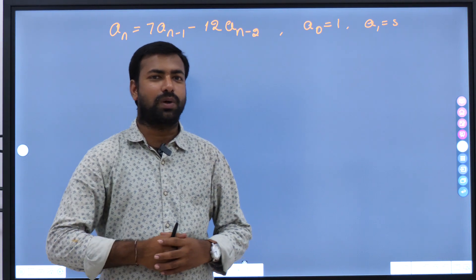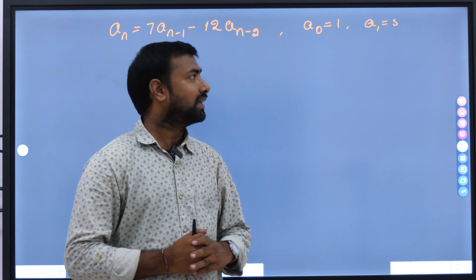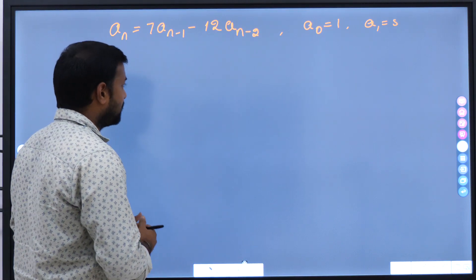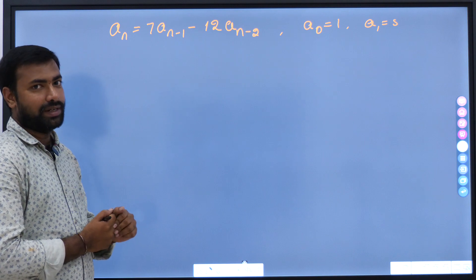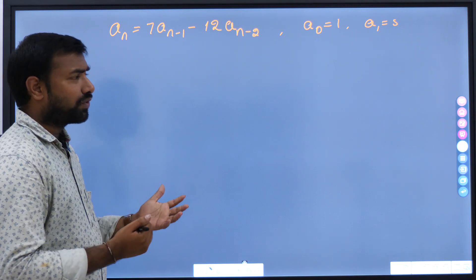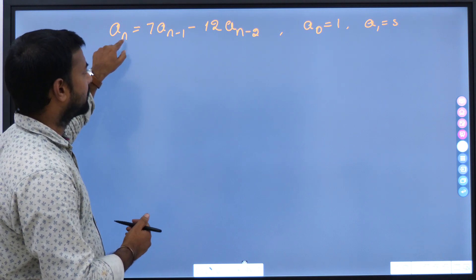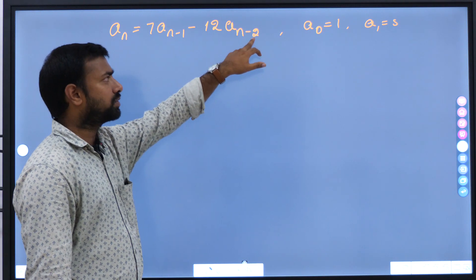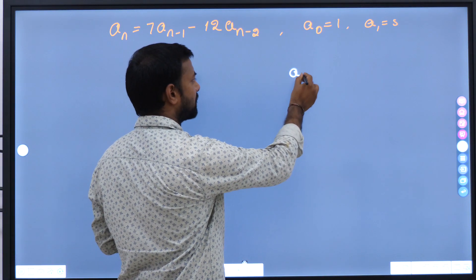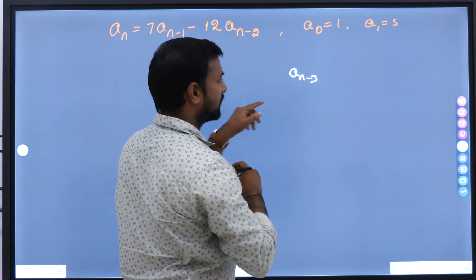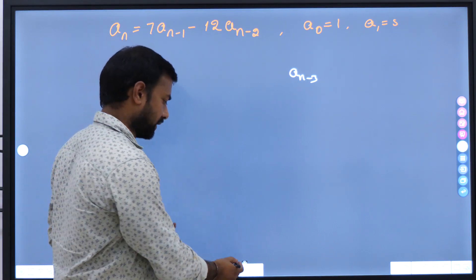Hi everyone, let us learn how to solve a linear recurrence relation with constant coefficients. Here I am taking one example. This is a recurrence relation of degree 2. How to find the degree of a recurrence relation? Here you have a_n and here I have a_{n-2}, therefore it is of degree 2. Suppose if you have a_{n-3} starting with a_n, then it is degree 3. For a_{n-4}, degree 4, and so on.